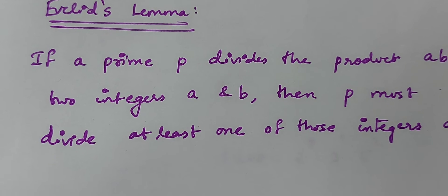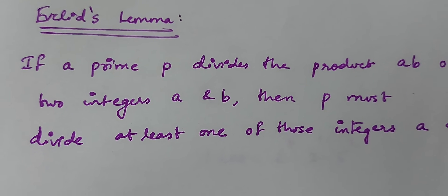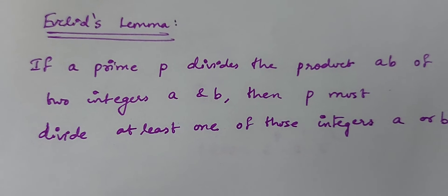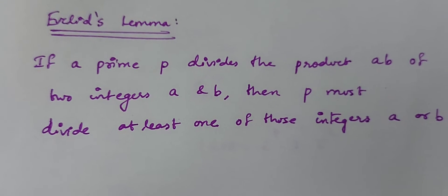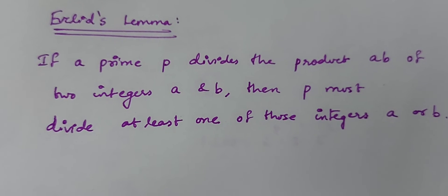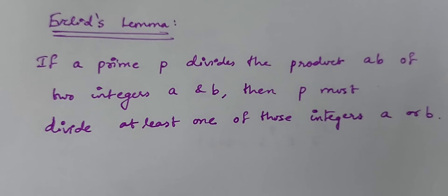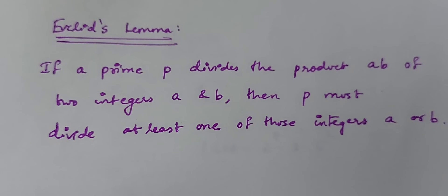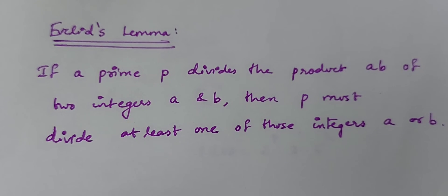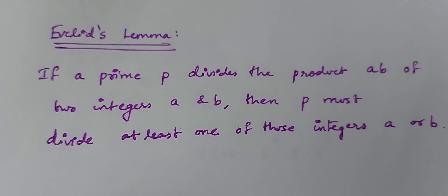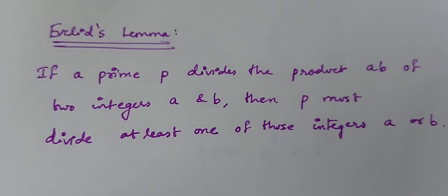Now let us get into the uniqueness part. In the uniqueness part, we say there is a unique prime factorization for every number. To prove the uniqueness part, we will use a lemma — Euclid's lemma. What Euclid's lemma says is that if a prime number p divides the product a·b of two integers a and b, then p must divide at least one of those integers a or b. So if p divides a·b, then p divides a, or p divides b, or p divides both.